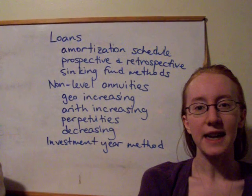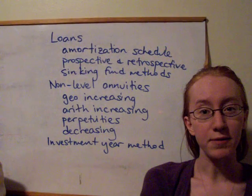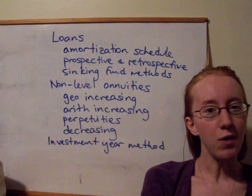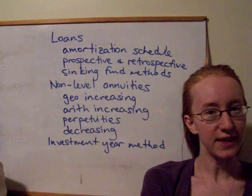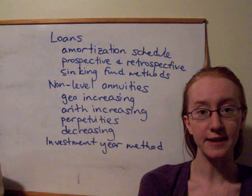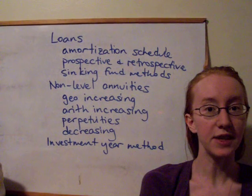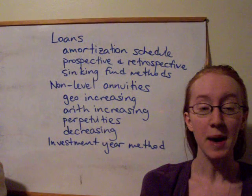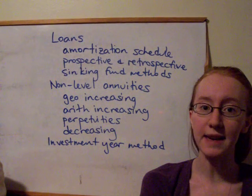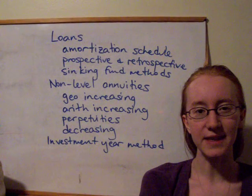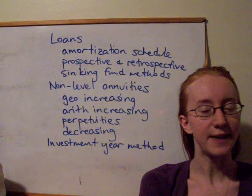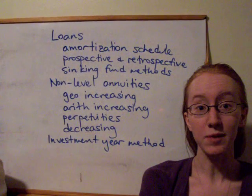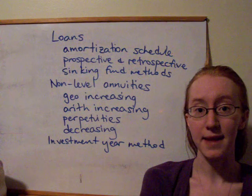The last thing we looked at that week was a different method of repaying a loan, which is the sinking fund method, where all we do in terms of our contract with the lender is pay off the interest as it goes. So each year we pay off the same amount in interest and the loan really never accumulates in value. But then separately, we build up a fund which will give us the loan amount at the time the loan is due. We can calculate the total payment under that method as well.